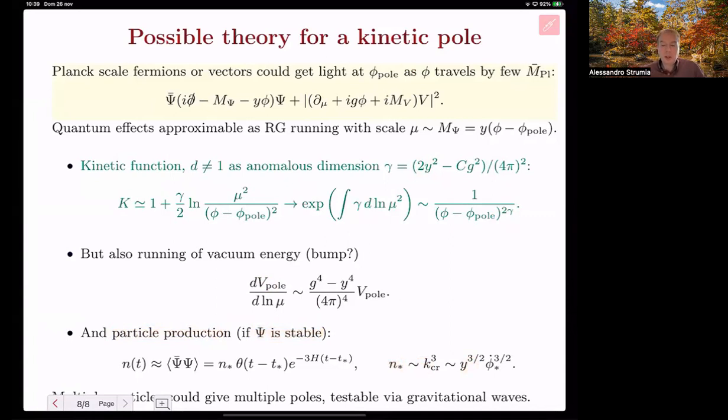To conclude, let me tell that maybe many particles could get light at different points, giving multiple poles, and this will give a multi-peak feature that can be testable via gravitational waves. That's all. Thank you. And bye.